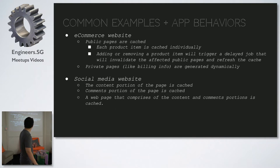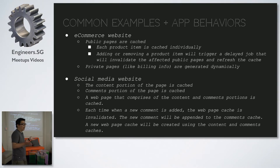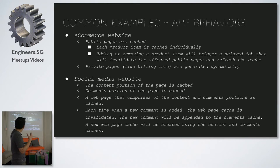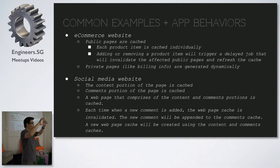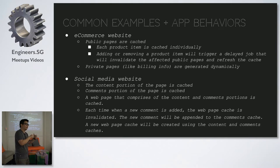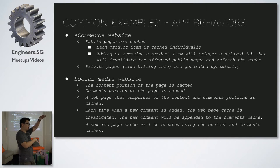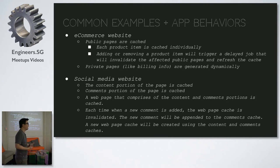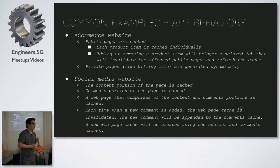For an e-commerce website, you can cache all the public pages because they're the same for hundreds of thousands of users. You can also cache every product item fragment — a page showing 20 products can have each product as a fragment. If one product description changes, you only update that fragment, then invalidate the top-level page cache, which reconstructs quickly from the fragments. Private pages you do not cache — leave them out and generate them dynamically.